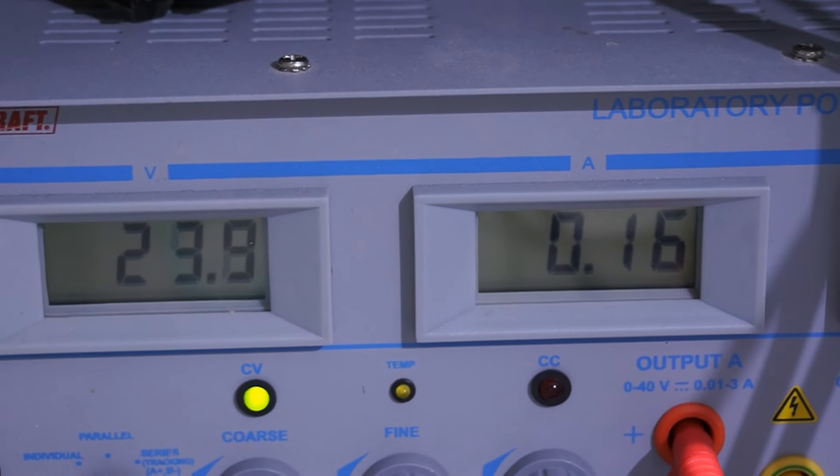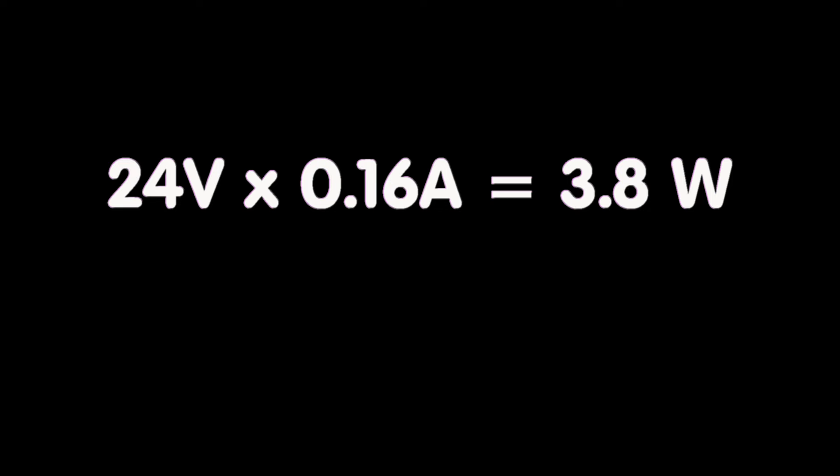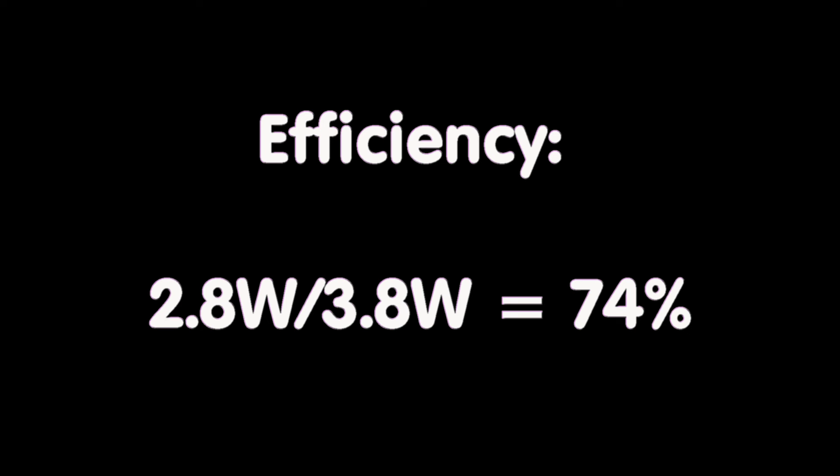If we make the power calculation, 24 volts times 0.16 amperes equals 3.8 watts. The buck converter has an efficiency of 2.8 watts divided by 3.8 watts equals 74%. 26% are lost and have to be dissipated by the buck converter itself.